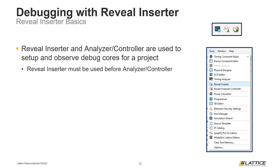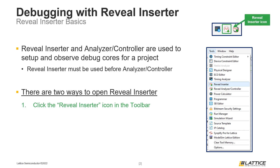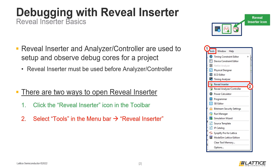Before Reveal Analyzer can be used, debug cores must first be added using Reveal Inserter. There are two ways Reveal Inserter can be launched. The first way is to select the Reveal Inserter icon from Radiant's toolbar, as shown in the figure. The second way is to select Tools from Radiant's menu bar and then select Reveal Inserter from the drop-down list.